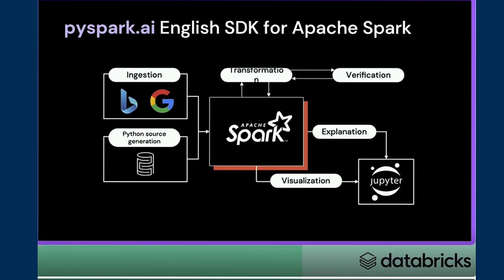The PySpark English SDK can be used for ingestion, transformation, verification, and visualization. It uses generative AI technology and large language models to convert English language into PySpark Python source code, which is then compiled into bytecode. It is very interesting.